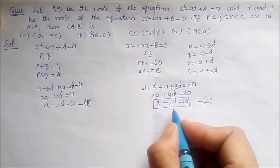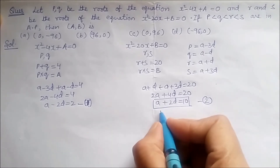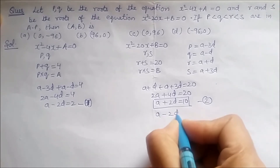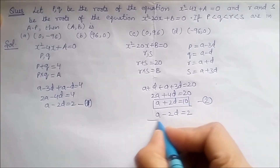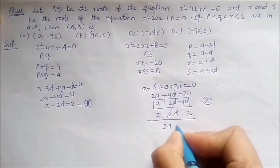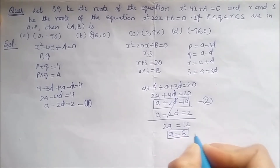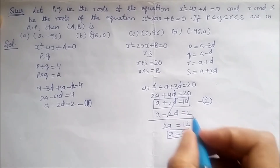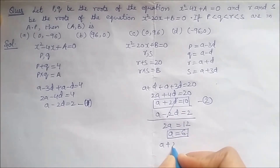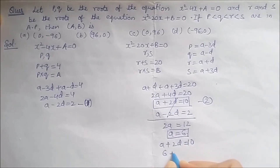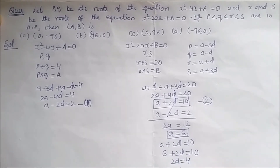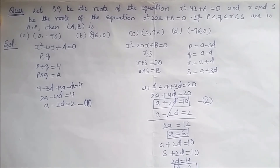Solving the two equations — A - 2d = 2 and A + 2d = 10 — by adding them: 2A = 12, so A = 6. Substituting A = 6 into the second equation: 6 + 2d = 10, so 2d = 4, giving d = 2.